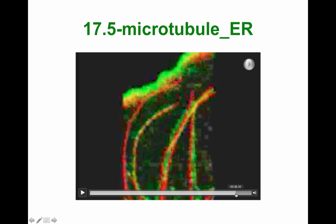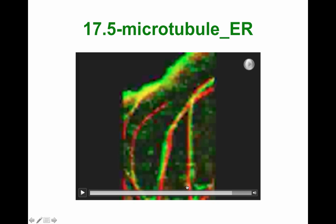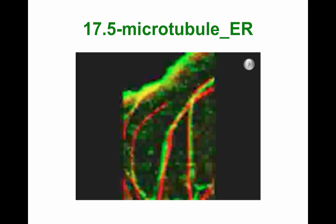What this movie shows is that the dynamic instability of the microtubule network can be used by the cell to extend and give a dynamic nature to the endoplasmic reticulum. The microtubule network was shown in red, and the membrane extensions of the endoplasmic reticulum were shown in green. You can appreciate that the endoplasmic reticulum network is piggybacking on the microtubule network, so the endoplasmic reticulum continues to be moved with the cell as the cell is moving.